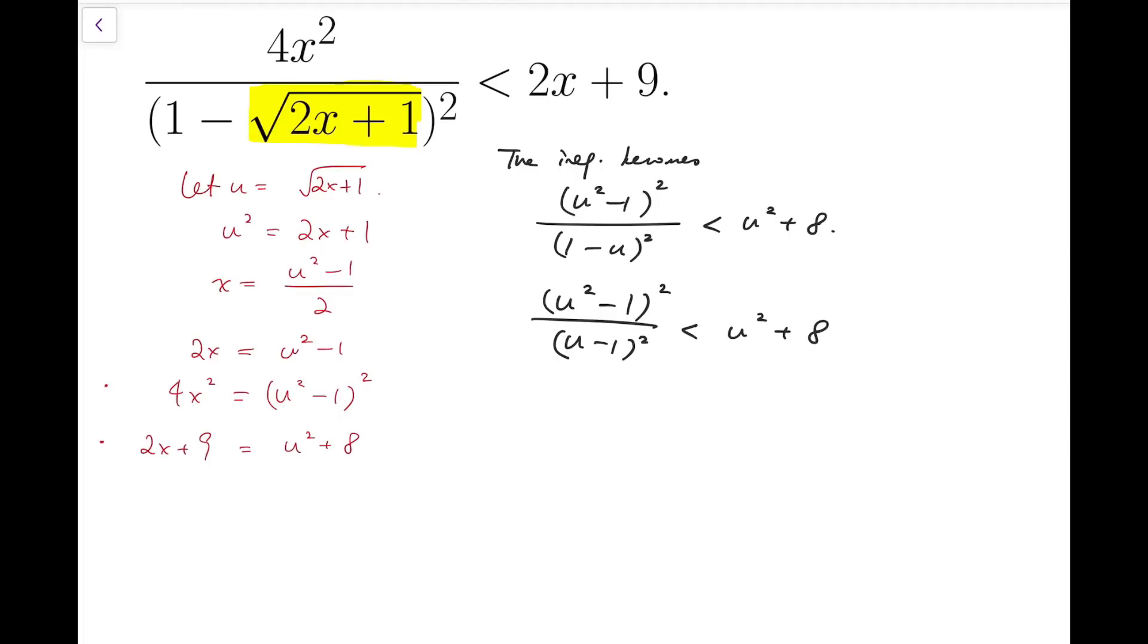Or to make things more rigorous, I can do it this way. By multiplying u minus 1 whole squared to the other side, so we have u minus 1 whole squared times u squared plus 8. And then I'm going to take out u minus 1 whole squared as a common factor.